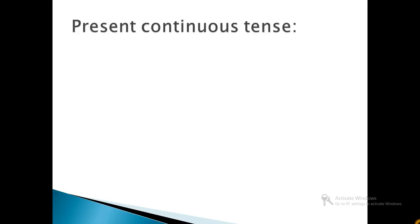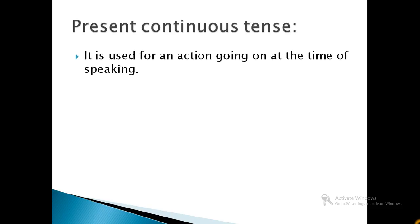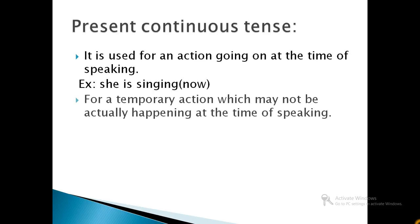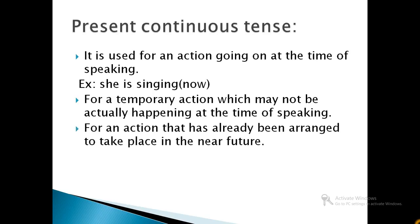The next one, present continuous tense. It is used for an action going on at the time of speaking. For example, she is singing — that means the action is going on. It is also used for a temporary action which may not be actually happening at the time of speaking. It is also used for an action that has already been arranged to take place in the near future. For example, I am going to cinema tonight.